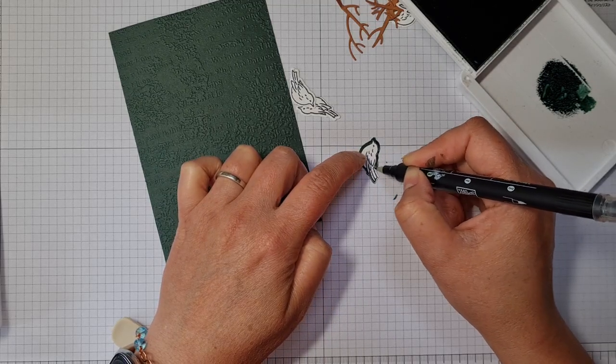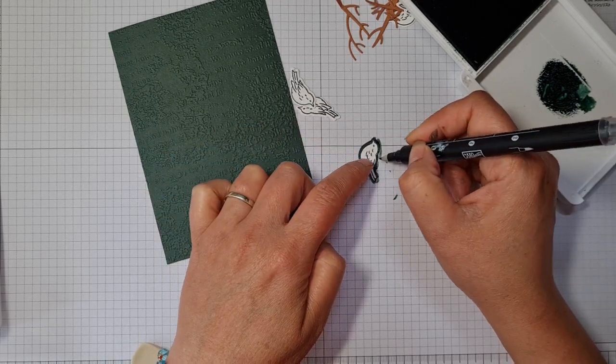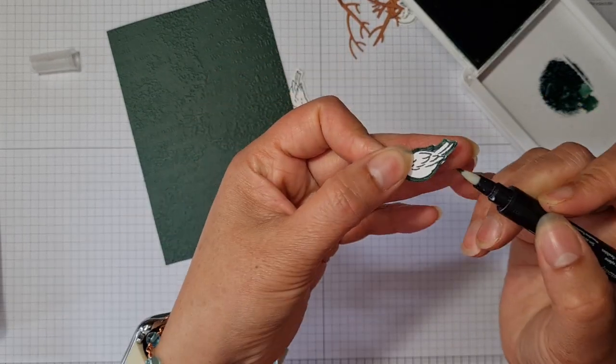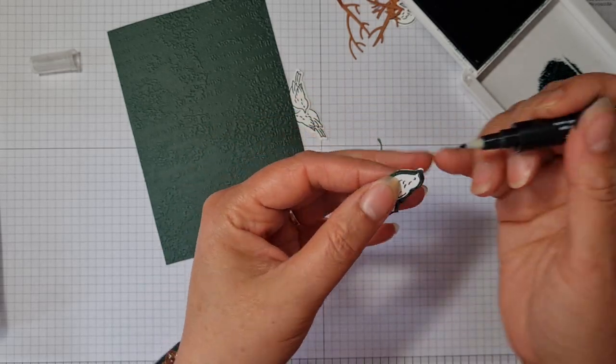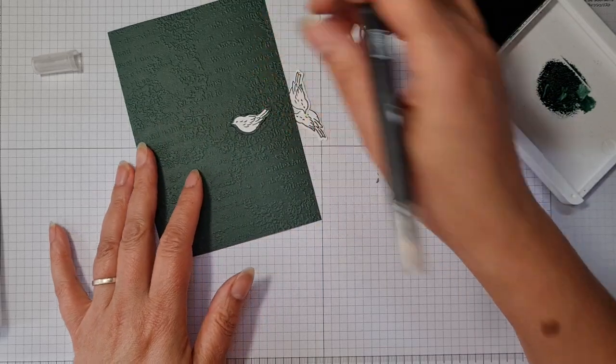So the other option is that you cut these out by hand. You could fussy cut these out. But there was a little nifty trick to get around that issue of the white border.